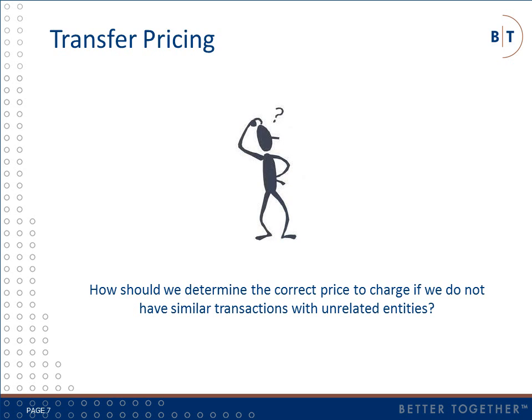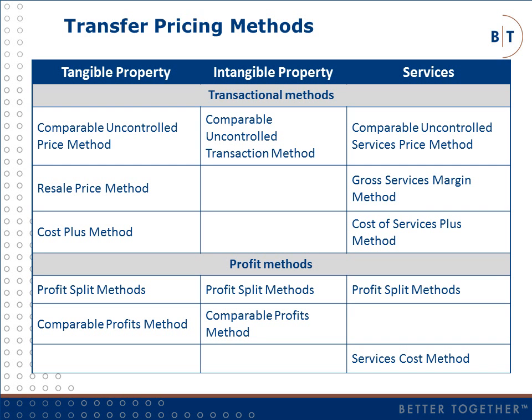So how would unrelated parties price a given transaction? In most cases, it's difficult or impossible to find an identical transaction between unrelated parties. So transfer pricing rules generally require us to use the best available method to determine a price that will provide an arm's length result. The methods used to determine an arm's length result tend to be similar across jurisdictions, but application of the methods can vary significantly. The selection of the appropriate method is a critical step in transfer pricing analysis.